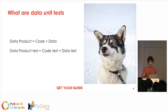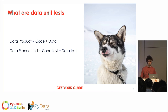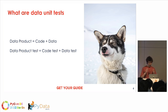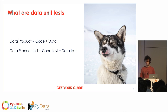Data products actually combine code and data, and you need both to have something useful for the business. In classical software development, it's common practice to ensure quality with automated tests — and there you focus on testing the code. However, if you want to ensure the quality of your data product, you need to validate not only the code, but also the data. And one way to validate the data is to have data unit tests.